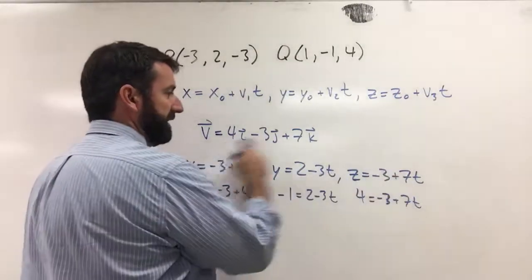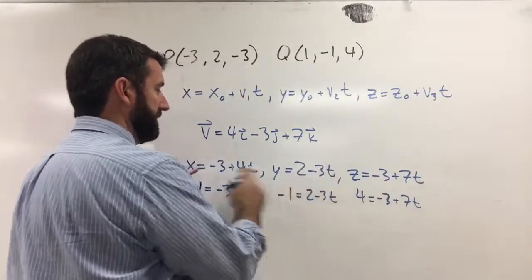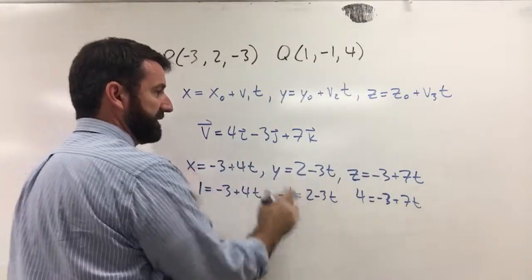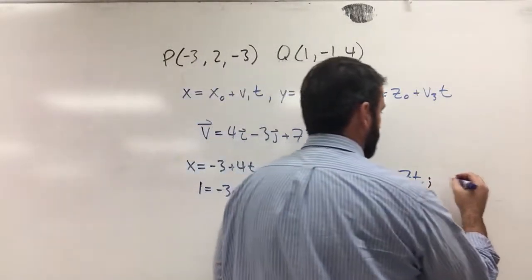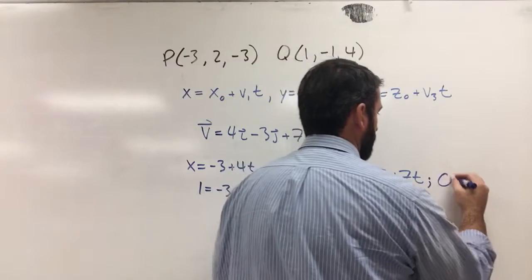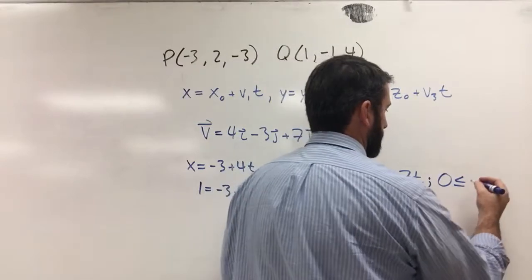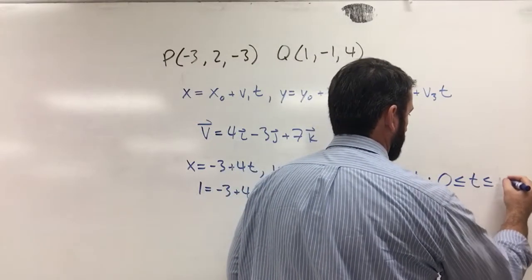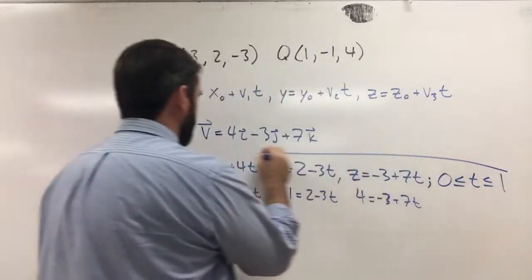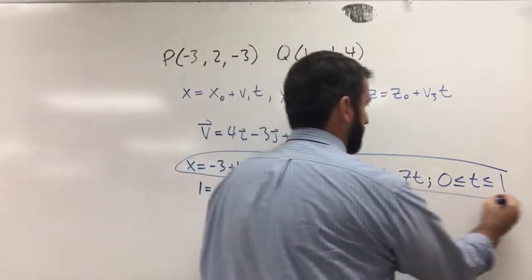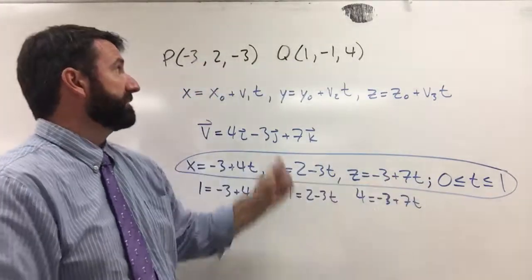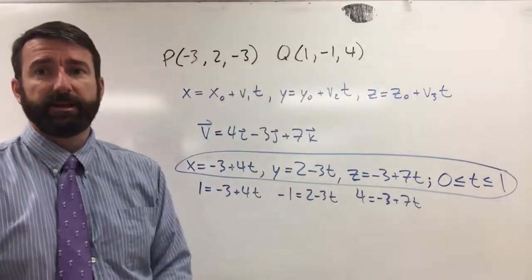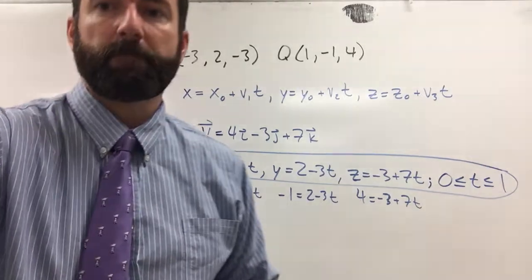And so all we need to do to parameterize this is just take the parametric equations for this line and then add that t is going to be between 0 and 1. So 0 ≤ t ≤ 1. And that's our parametric equations parameterized so that we get this line segment.